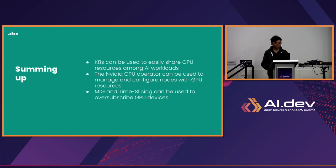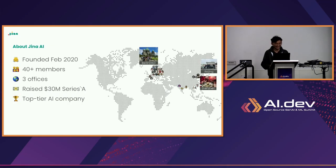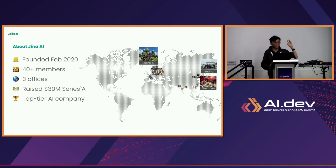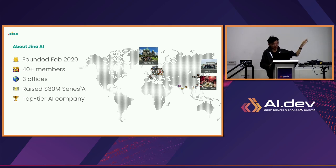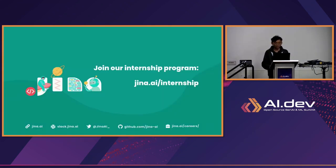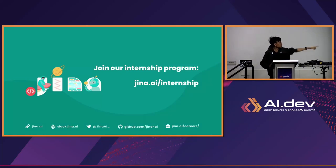That's it for questions. Let me briefly introduce the company. GINA AI is an AI company based in Berlin. We do embedding models, as well as products like Scene Explain — a visual language model — and Prompt Perfect, a prompt engineering tool. Our embedding models were front page of Hacker News and recognized by LlamaIndex. The company has 40-plus members with offices in Berlin, Beijing, and Shenzhen. We raised $30 million in Series A. If you're interested in internships, visit jina.ai/internships; for full-time positions, jina.ai/careers. Thank you for coming.